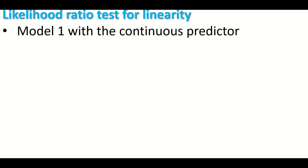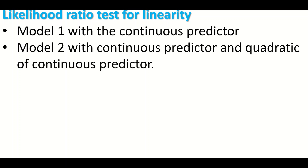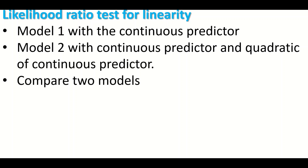To perform this test, first generate a binary logistic regression model containing the continuous predictor with any additional predictors, such as categorical variables like sex or occupation. Then generate a second model containing both the continuous predictor and the quadratic of the continuous predictor — that is, multiplying each score in the continuous predictor by itself. Compare the two models using the likelihood ratio test for linearity.